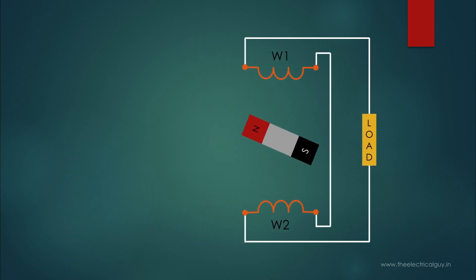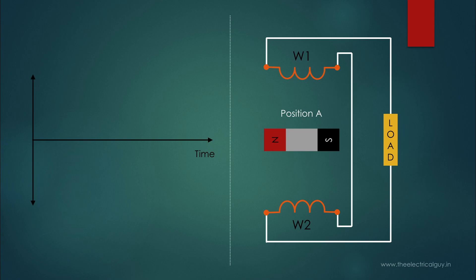Now, let's draw a waveform for voltage produced by this machine. When the magnet is in position A, voltage across the winding is zero. When position of magnet changes to B, maximum voltage will be generated across the winding. When the magnet goes to position C, again the voltage becomes zero.